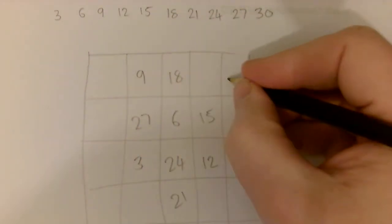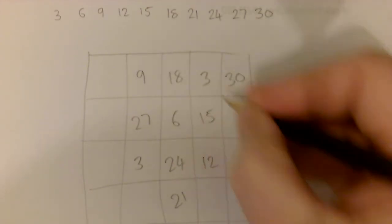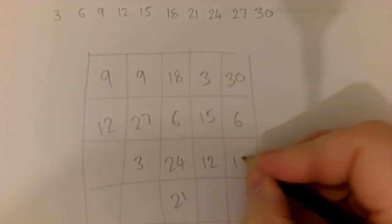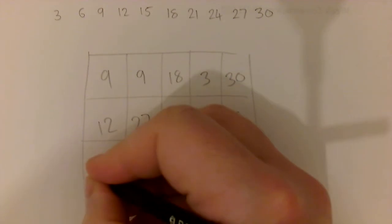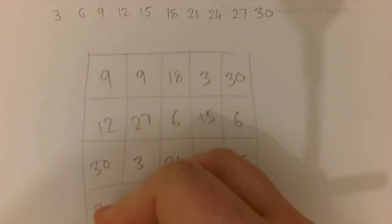We've used the 3x table. You could use the 0.3x table. You could use the 30x table, depending on how confident you are with the number. So, we're getting there. I'm going to put another 30 in again.